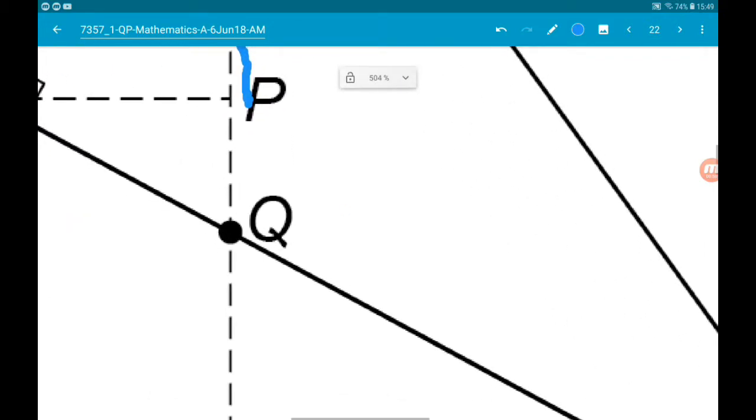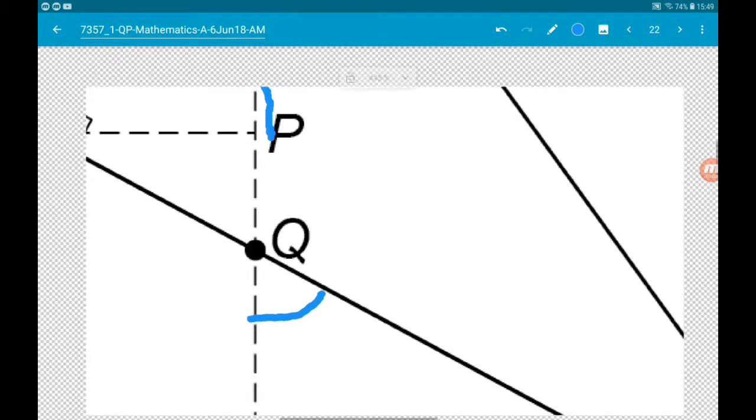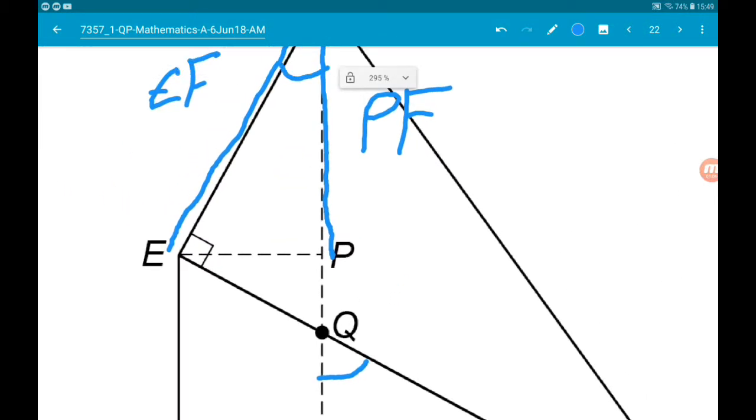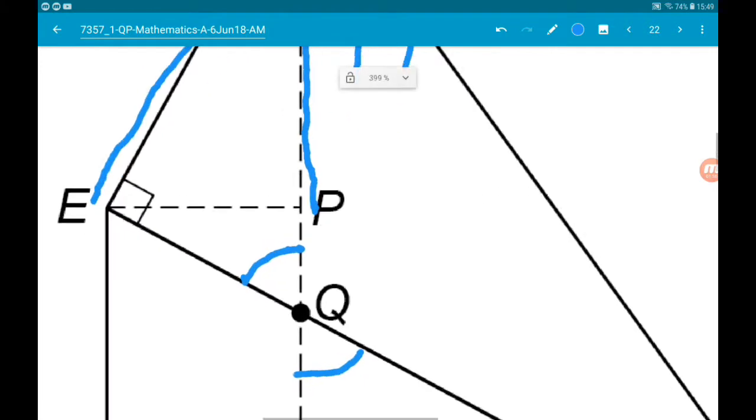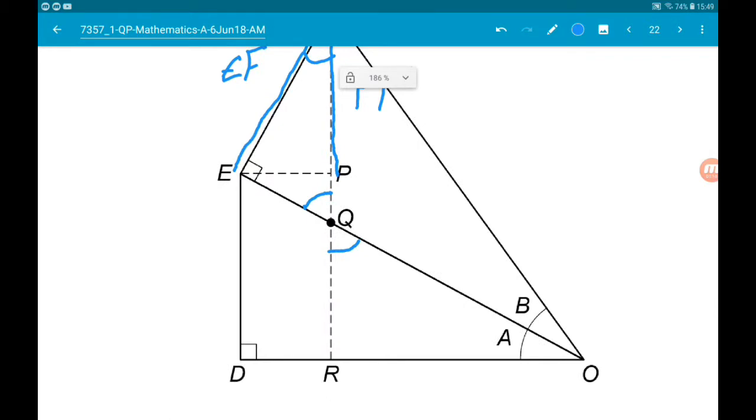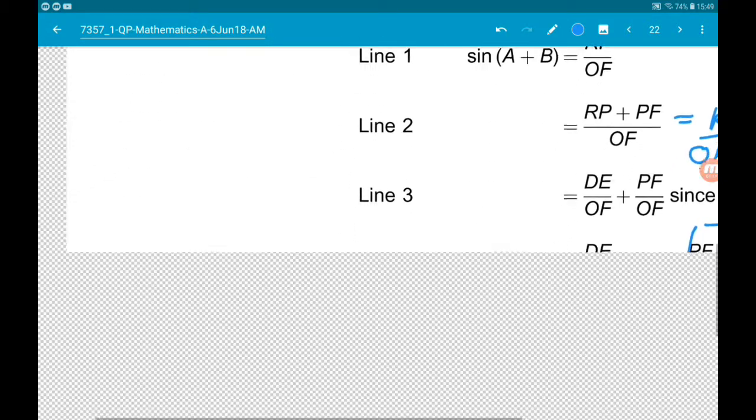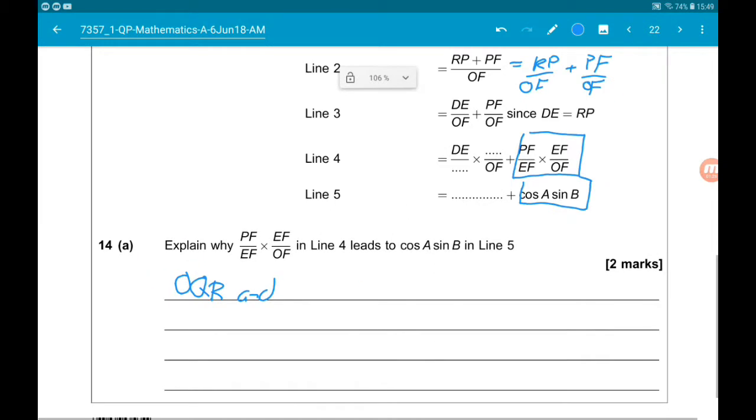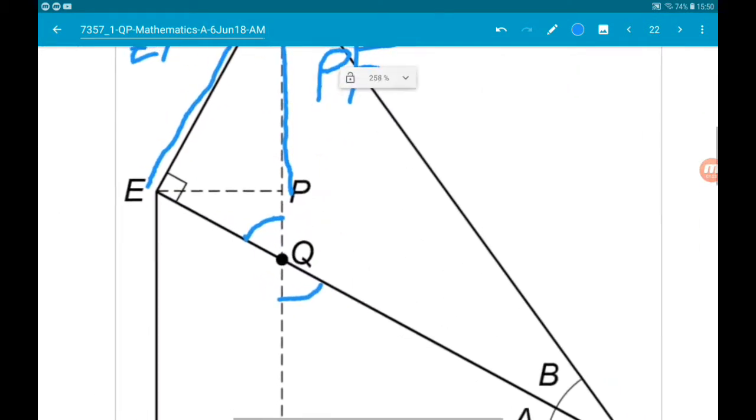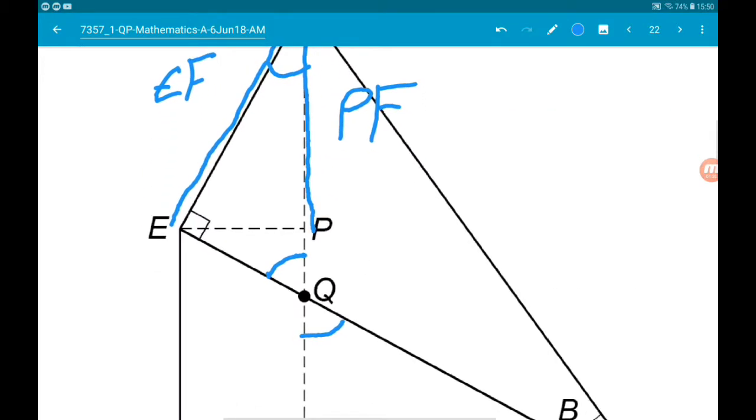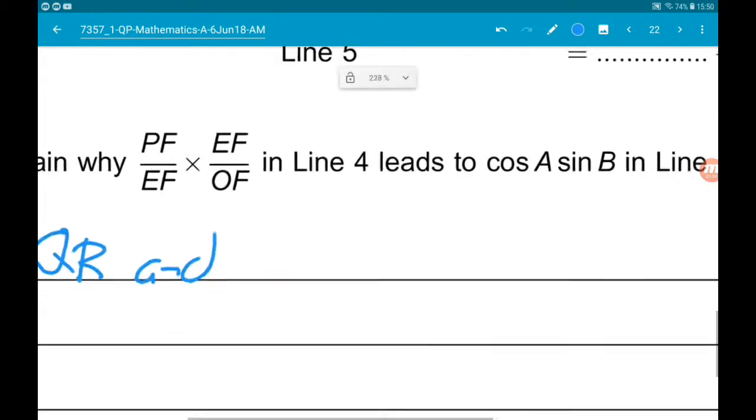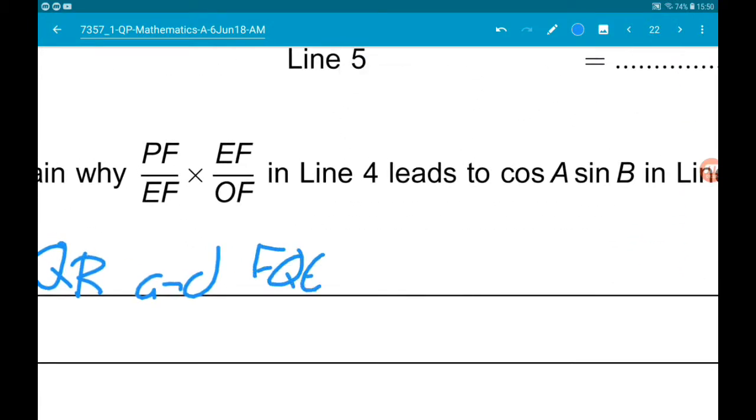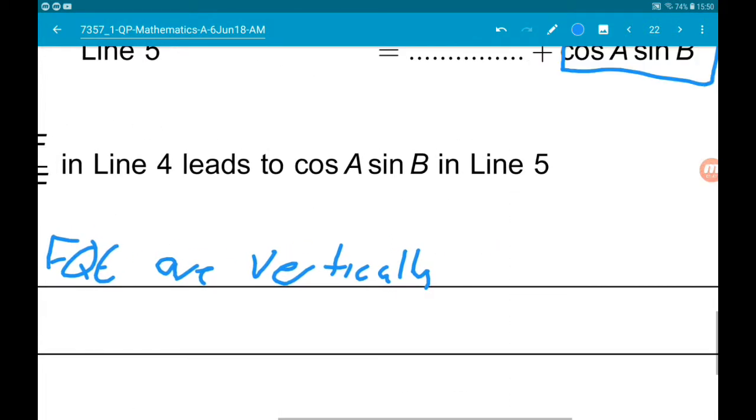So what would we get is if we can find what this angle here would be. So looking at the diagram, well, we could say that this angle and this angle are equal. So O Q R and this other angle we could call F Q E. So they are vertically opposite, so equal.